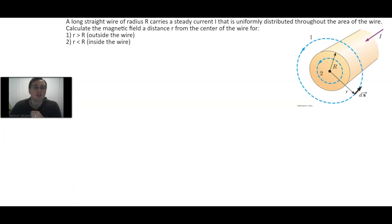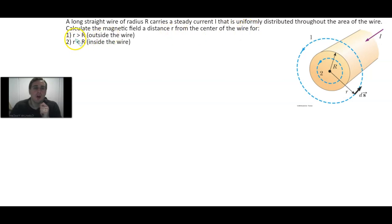It's a long straight wire of radius R, and the current we'll call I, uniformly distributed throughout the area of the wire. We want to calculate the magnetic field at distance r from the center of the wire for when little r is greater than capital R — outside the wire — and when little r is less than capital R — inside the wire.